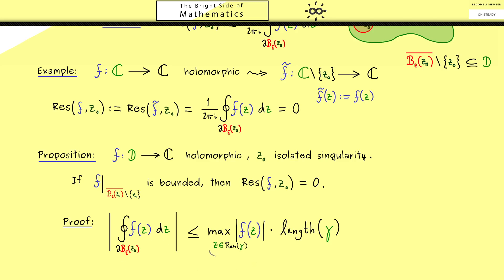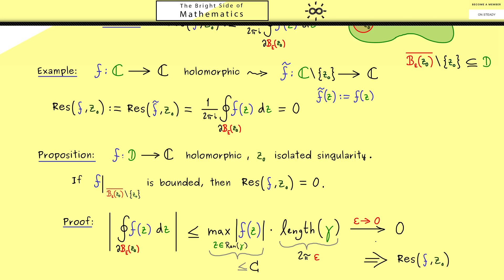We know two things: first, the maximum is bounded by some constant C since the function is bounded; second, the length of our circle is 2π·epsilon. This is the crucial part — epsilon is not fixed, we can make it as small as we want. Therefore the right-hand side can be made arbitrarily small, which means the contour integral must be 0, and in conclusion the residue also has to be 0.